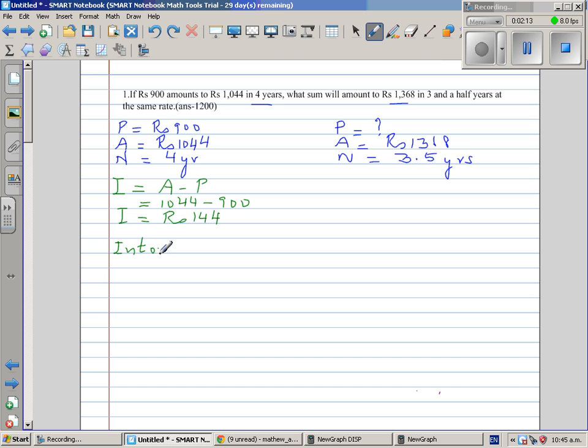Interest on 900 for one year would be 144 divided by four. So this is 72 divided by two, so that is 36 rupees. So interest on 900 for one year is 36.